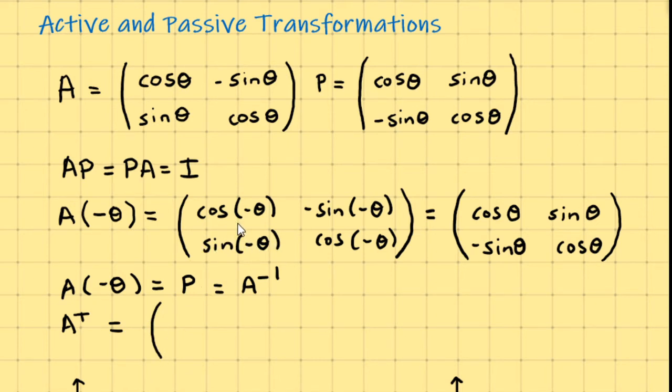but transpose means I make the rows into columns and the columns into rows. What do you get if you do that? So if I take this matrix A here, and I take the first row, and I make that into a column,